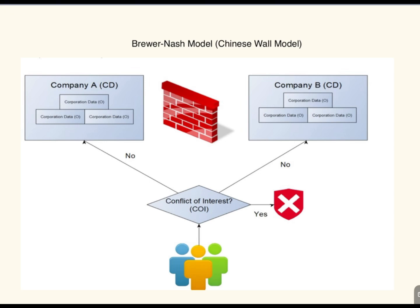The Brewer-Nash model, also called the Chinese Wall model, is a dynamic access control model designed to prevent conflict of interest by restricting access to competing companies' data. For instance, consider company A and company B. The key feature of this model is to prevent conflict of interest — a very important point.